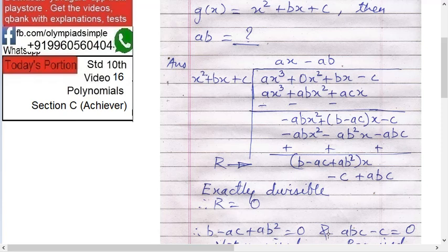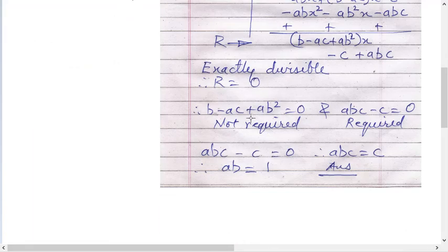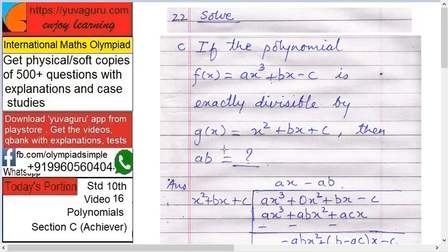b - ac + ab² is 0. And abc - c is also equal to 0. So let's solve this. What is required? We require ab. So cc can go on. Solve this, any one of these two or both if required. So this is not required in present case. This we have to do the judgment. And here it's easier. If you take c common and outside then c is 0. Therefore abc - c equals to 0. Therefore abc equals to c. cc gone. ab equals to 1. That's the required answer. ab equals to 1.